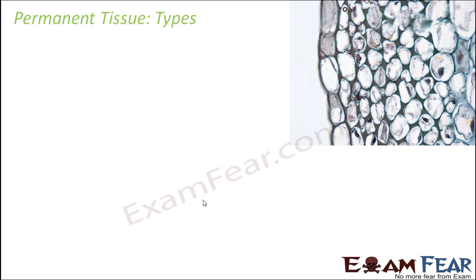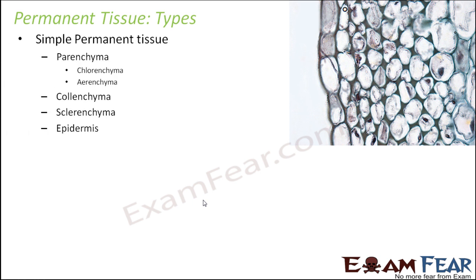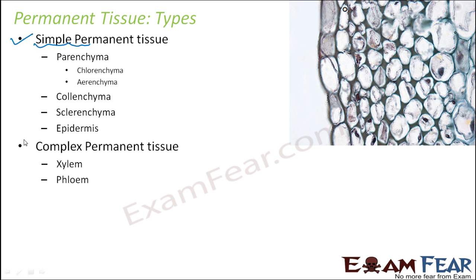Now we will look at the various types of permanent tissue. Broadly there are two types: simple permanent tissue and complex permanent tissue. Simple permanent tissue includes parenchyma, colenchyma, sclerenchyma, and epidermis. Complex permanent tissue is of two types — xylem and phloem. Let us talk about each of these types one by one.